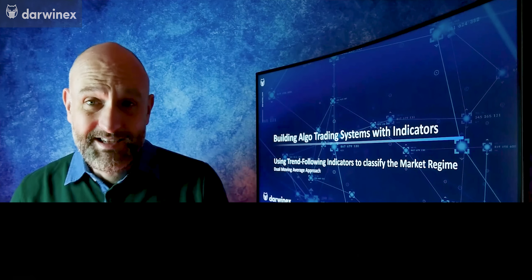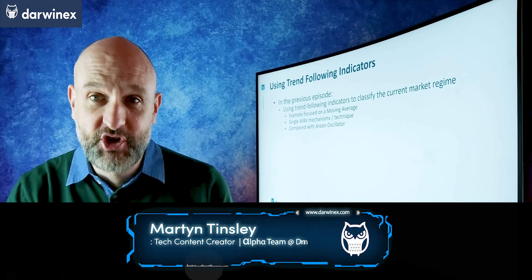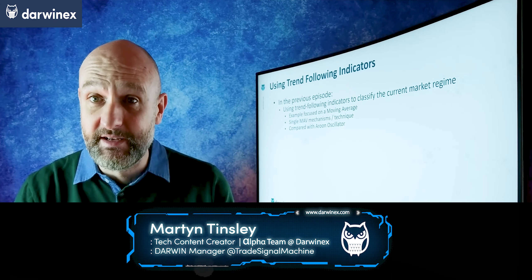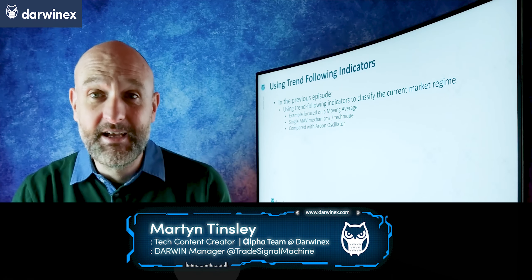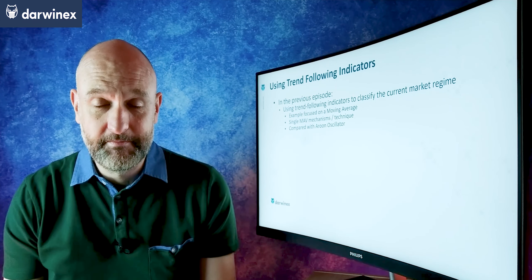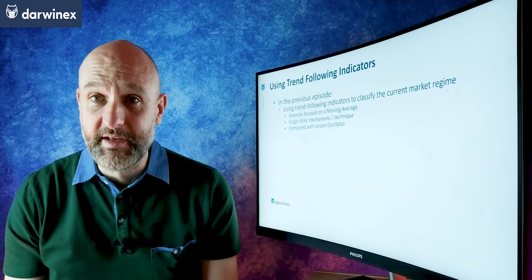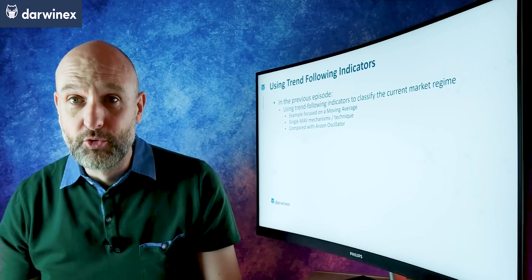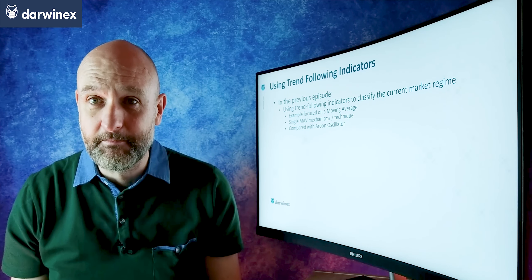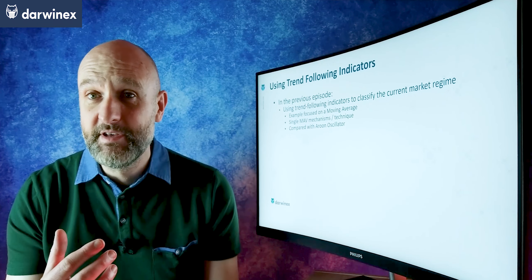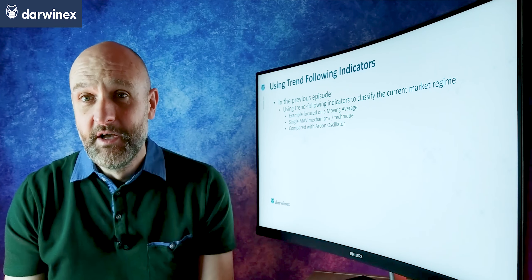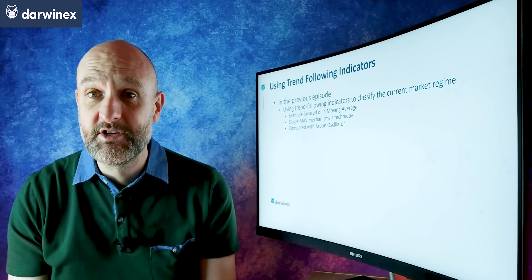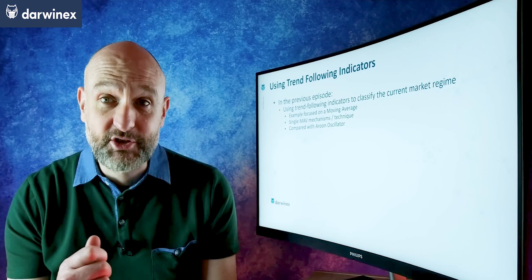Last time we looked at how we can undertake this challenge of identifying what the market is doing in terms of its trending behaviour. To do that, we used a single moving average line. But as we saw, one of the main problems is that it can only categorise the market as trending upwards or trending downwards, with nothing in between. We also looked at how this compared to the Aroon indicator, and saw that in terms of the classifications those two different indicators provide, it's actually extremely similar.